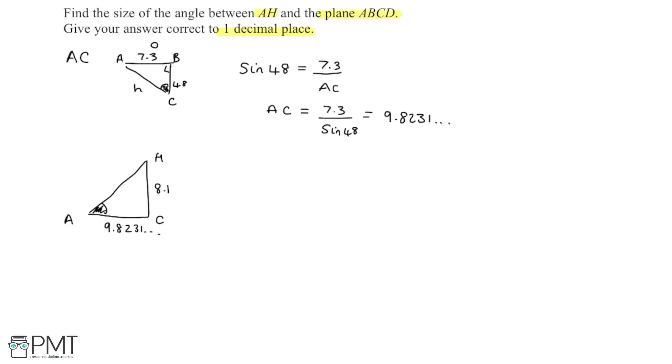So now, relative to this angle, we have the opposite side and the adjacent, so O and A, we're working with tan. So tan of theta is equal to the opposite over the adjacent, so the 8.1 divided by 9.8231, the exact value there.